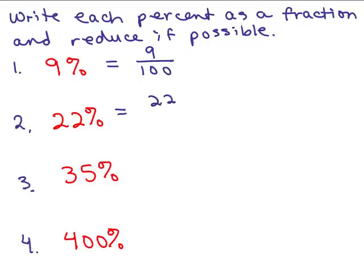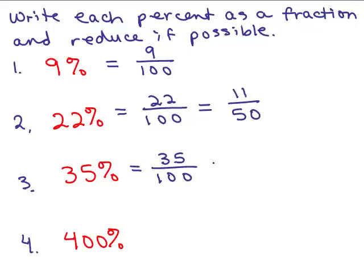Next one, 22%, that will be 22 over 100, and that we can reduce. So we could divide the numerator and denominator by 2 to get 11 50ths. Next, 35%, that's 35 over 100, which reduces to 7 20ths. And the last one,